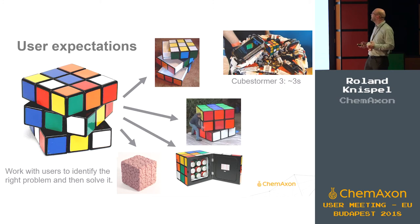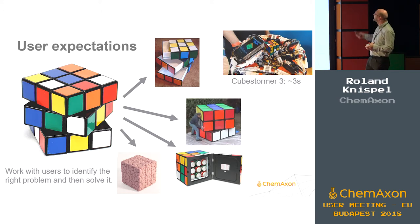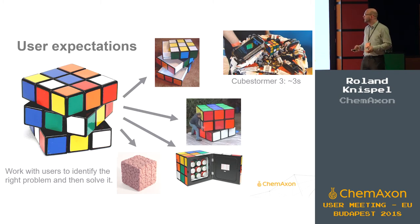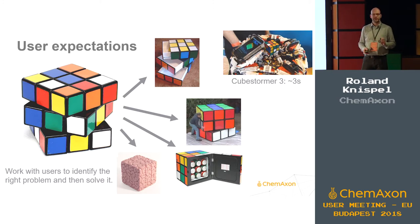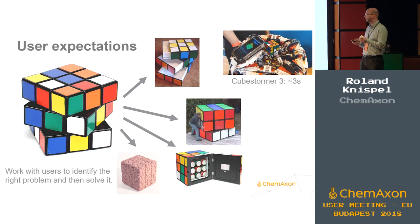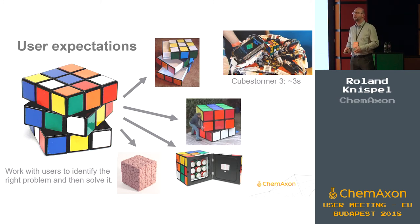There is actually a robot that does that for you — it's called CubeStormer 3. It can solve a Rubik's Cube in about three seconds. It uses a cell phone with a camera for state identification; all calculations are done on the smartphone, and then it just solves it. What I'm taking away from this is that we have to work very closely with our users to identify what the actual problem is that we want to solve, and then implement it in the right way.